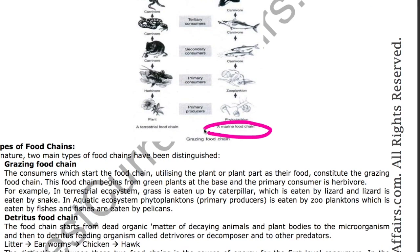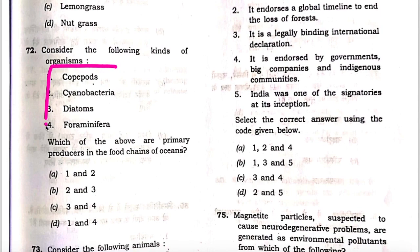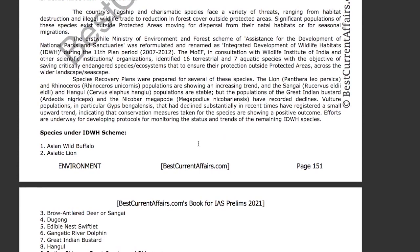Here we have also given the diagram of the marine food chain. Plants and plant-type organisms such as phytoplankton — primary producers — are shown. Now see the question: which of these organisms are the primary producers?